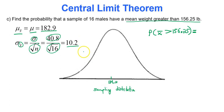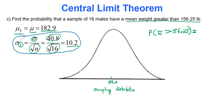This is where most people mess up — they forget to adjust their standard deviation. I'm doing this because we're now looking at the probability of a mean weight being greater than 156.25 as opposed to a single weight, a single data value. I'm looking at a mean now.